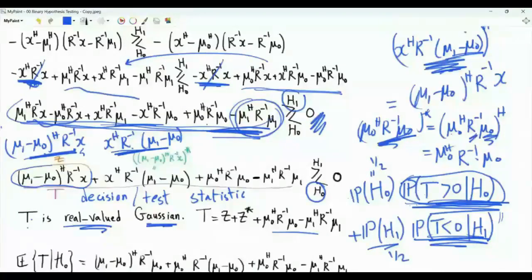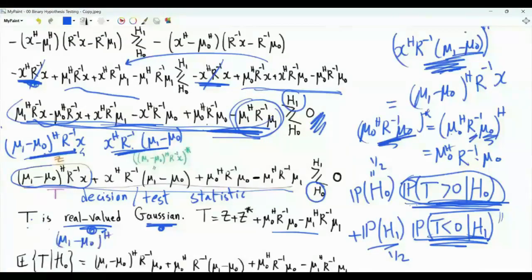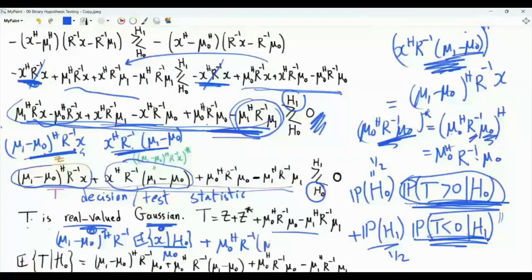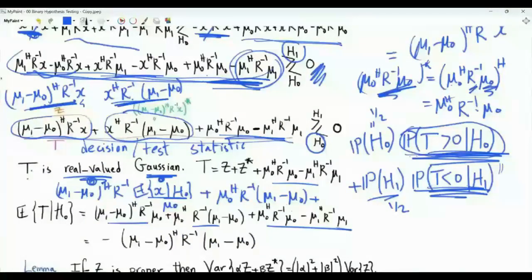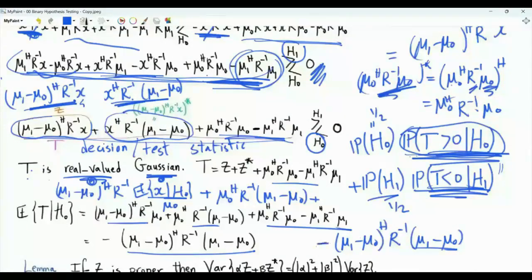To compute this probability, we need the mean and variance of T, since T is real-valued Gaussian. The expected value of T given H0 involves taking the expectation of each term: mu_1 minus mu_0 Hermitian R inverse E[X|H0], which is mu_0, plus mu_0 Hermitian R inverse mu_1 minus mu_0, plus the two constant terms. Combining these four terms yields the expected value of T given H0 equal to minus the quadratic form (mu_1 - mu_0)^H R^{-1} (mu_1 - mu_0).